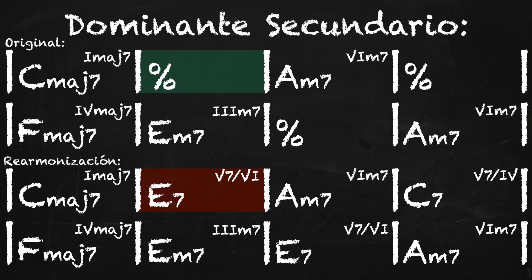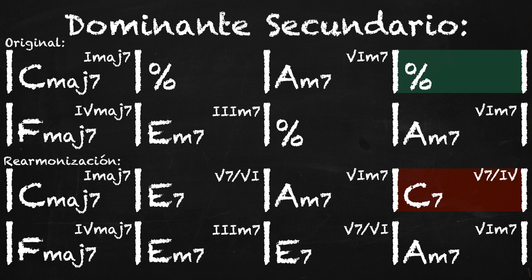Pasando ya el La menor, nos damos cuenta que ahora tenemos un Do 7. Pero Do 7 no existe en la tonalidad de Do mayor. Pero fíjate el acorde que está en el quinto compás: es un Fa maj7. Por lo tanto este Do 7 corresponde a un dominante del Fa, es el quinto grado del Fa. Por lo tanto la nomenclatura va a quedar como el V7 del cuarto.